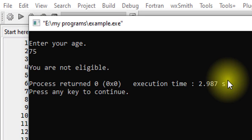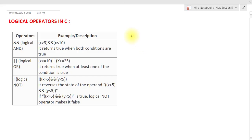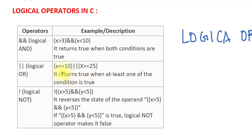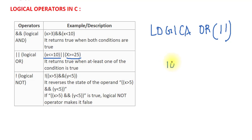Now let's look at the logical OR operator. This operator returns true even if just one of the conditions is true. If both conditions are true it returns true, if one is true it returns true, and only if none of the conditions are true does it return false. For example, if x is less than or equal to 10 or x is greater than or equal to 25, then all numbers between 10 and 25 on the number line are discarded.